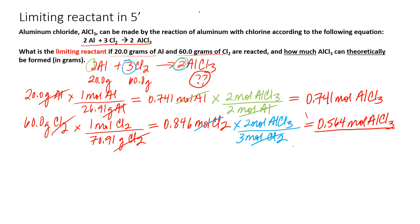So now to address the final part of this question, which is how much aluminum chloride can theoretically be formed. We simply take the 0.564 moles of aluminum chloride. My stylus is getting tired here. It's slowing down a little.